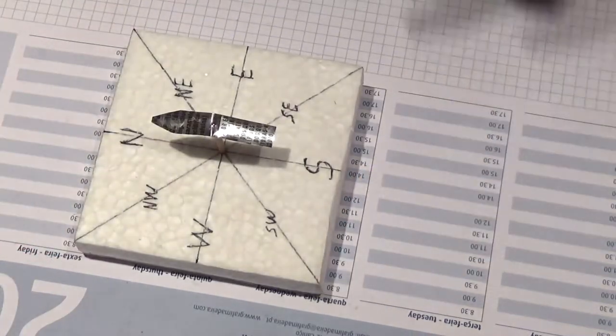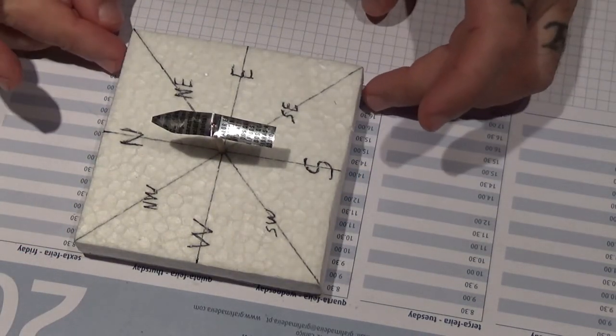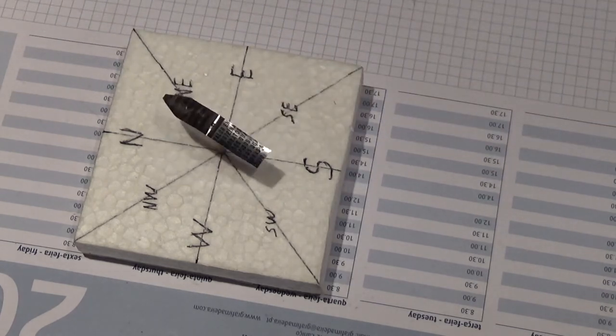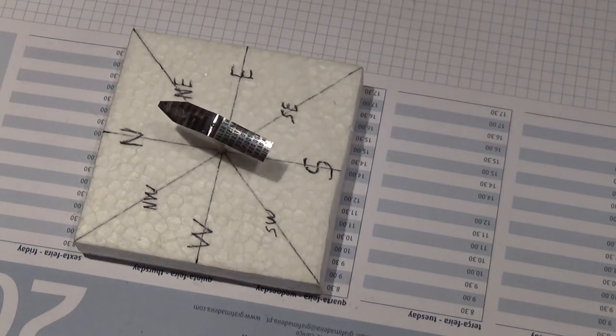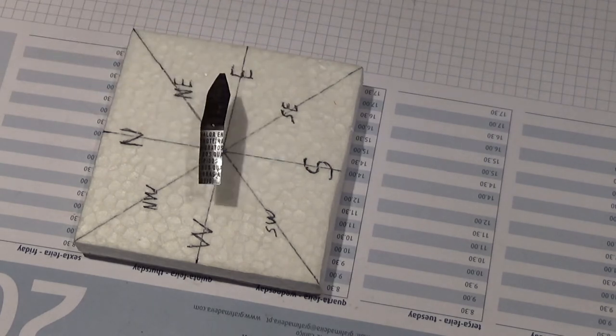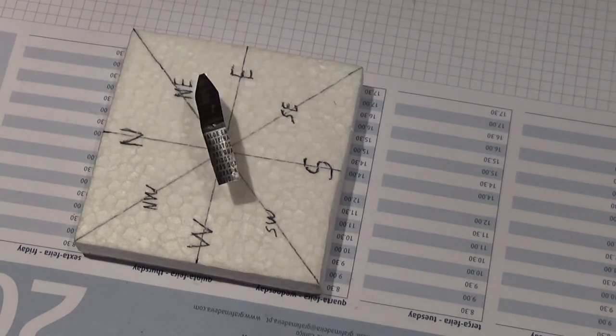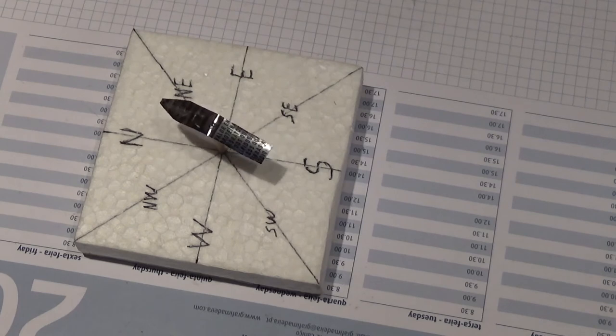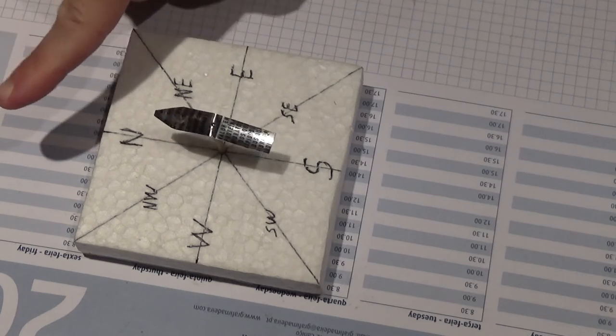And, this way, even though if I move it, it goes back to the same place. Let me move it once again. See, it always points to the right place. So, right now, I know that north is this way.